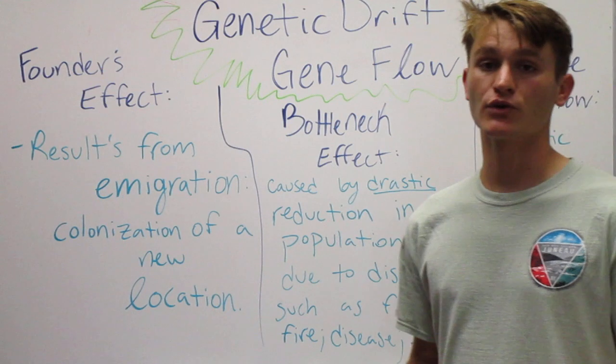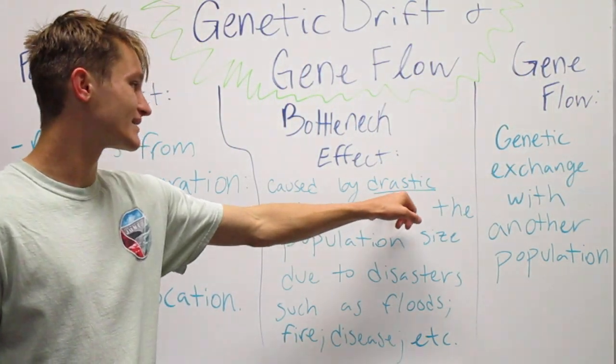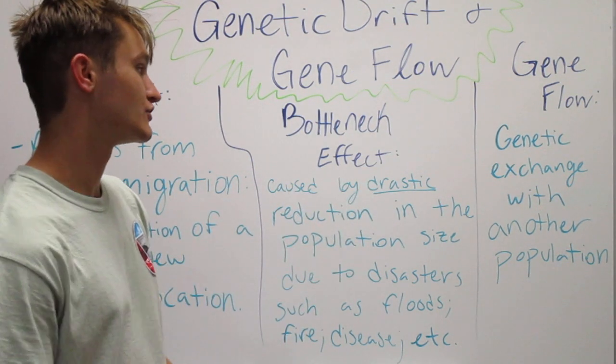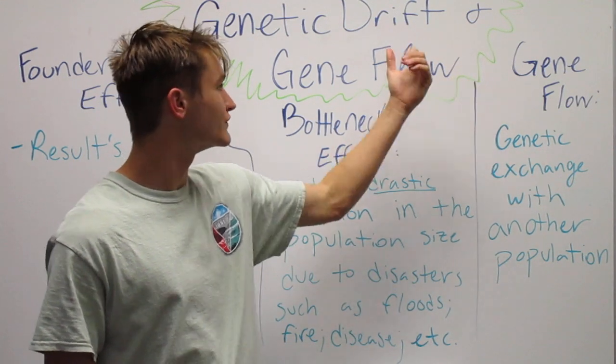Such as fires, disease, hunting, earthquakes, you name it. Anything that's naturally occurring and is drastic, makes a big change and a reduction of the population size. And we have gene flow also.